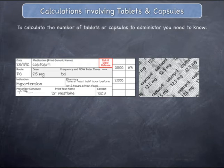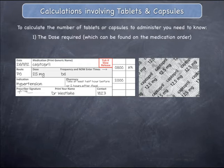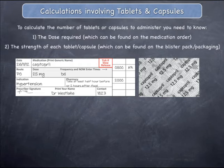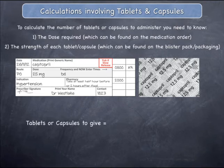To calculate the number of tablets or capsules to administer to the patient, you need to know the dose that the patient must receive in grams, milligrams, or micrograms. This information is always provided on the medication order in the box labelled dose. You also need to know the strength of the medication, which is printed on the medication packaging. If the medication is available in a blister pack, always check the blister pack itself rather than the box for the strength. The strength of each single tablet or capsule is called its stock strength. The number of tablets or capsules to administer is equal to the dose that has been ordered, divided by the stock strength.